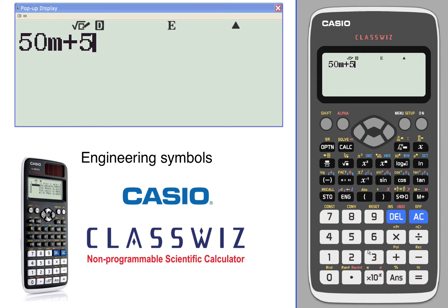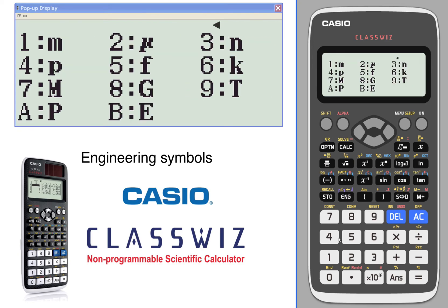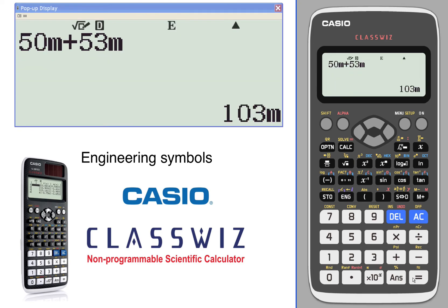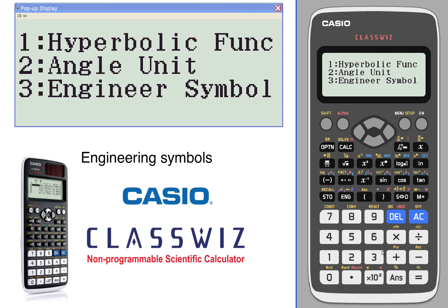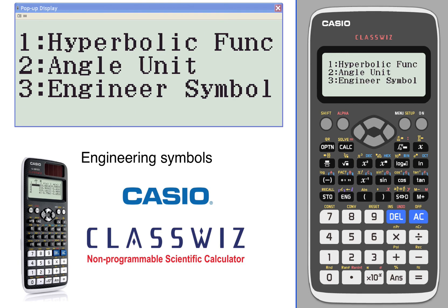And get 103 M. So you can use all your engineering symbols to do calculations with. Again, the engineering symbols are currently turned on, so in order to turn those off you have to go into the setup.